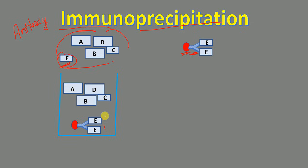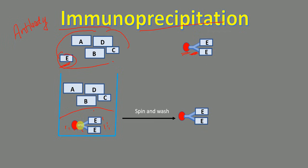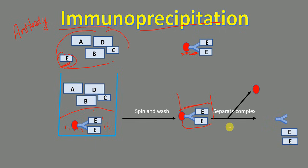After incubation, we spin and wash the sample. Our protein of interest settles down because it has been bound by the antibody, which is attached to the magnetic beads. Other unbound proteins are removed from the mixture. We then separate the complex — the magnetic beads are removed — and the antibody is separated from our protein of interest, giving us protein E.